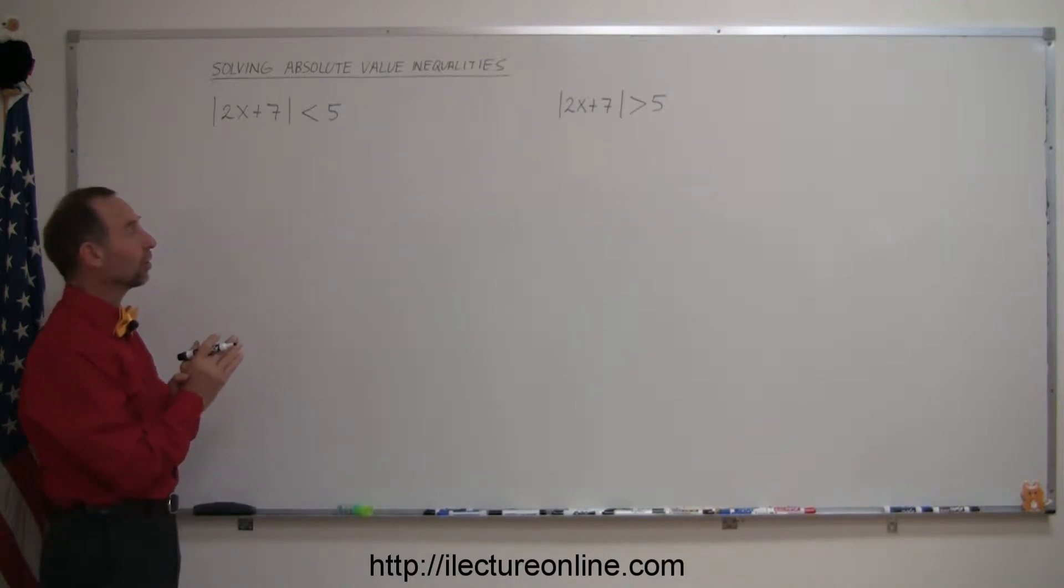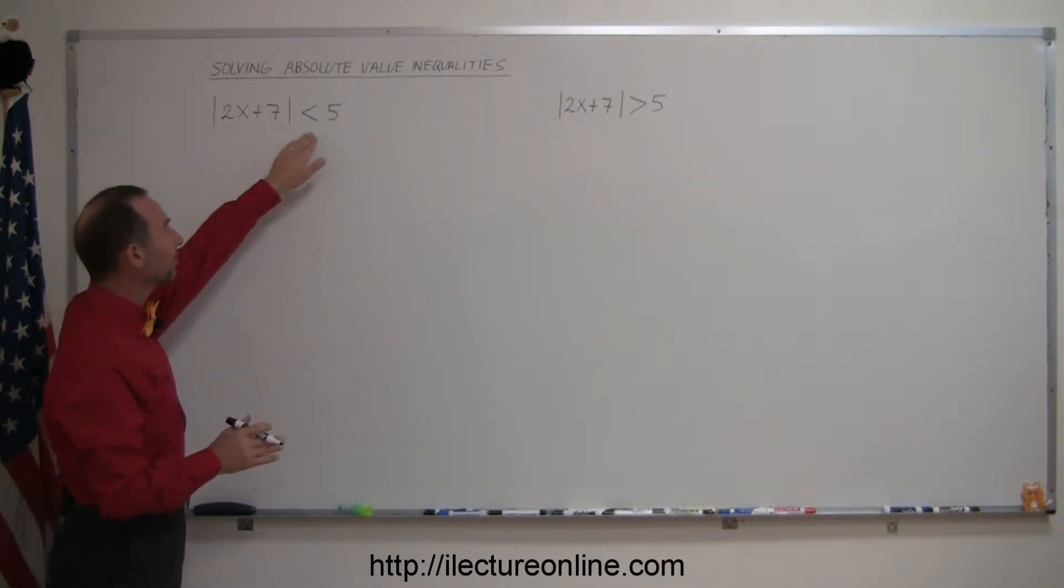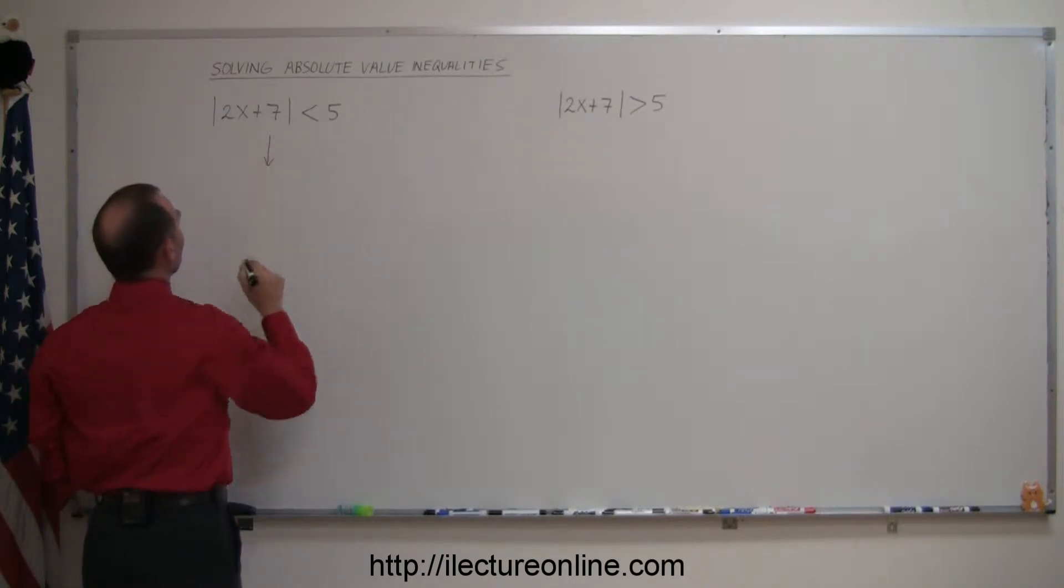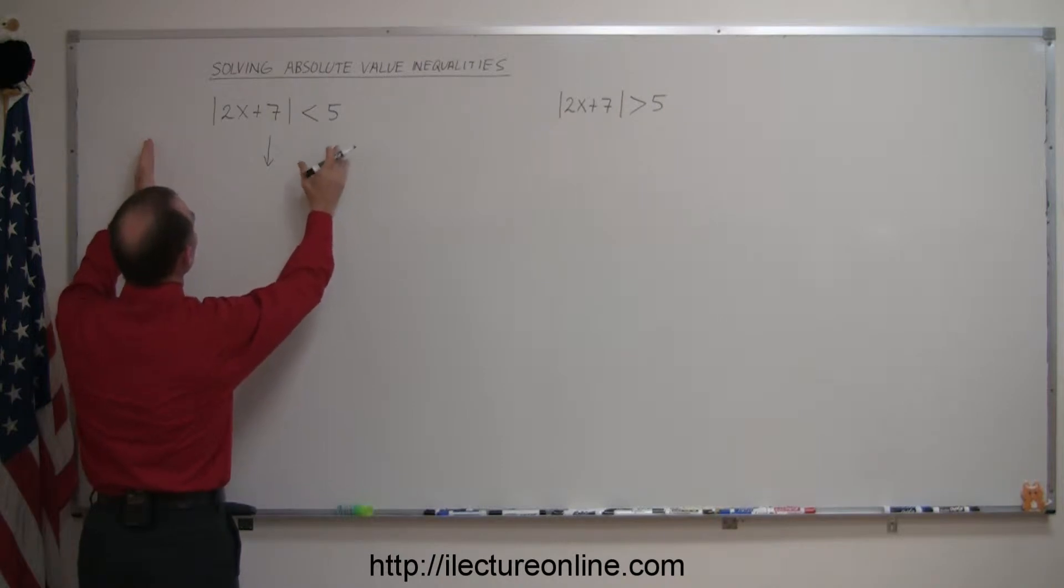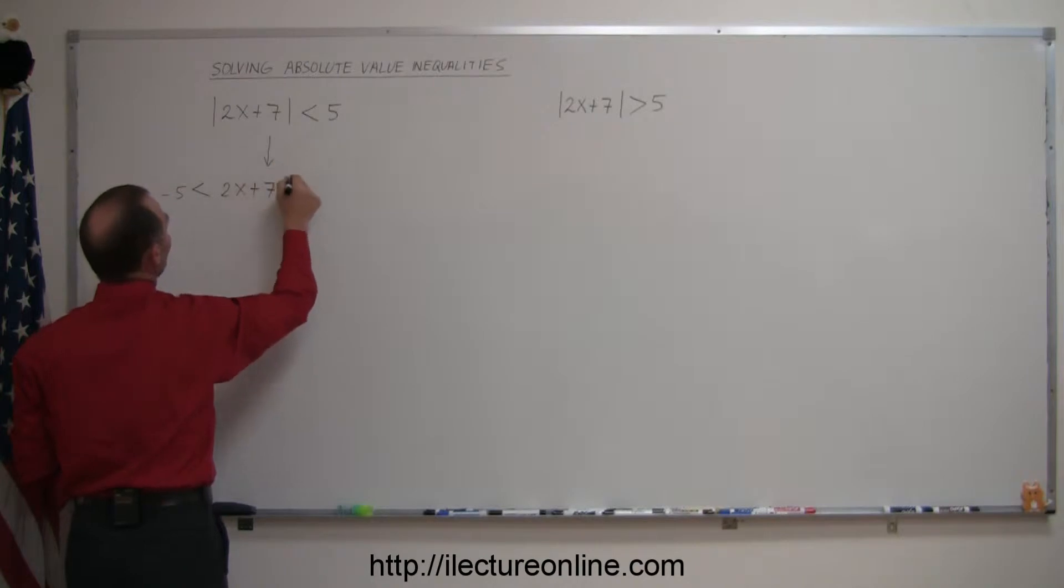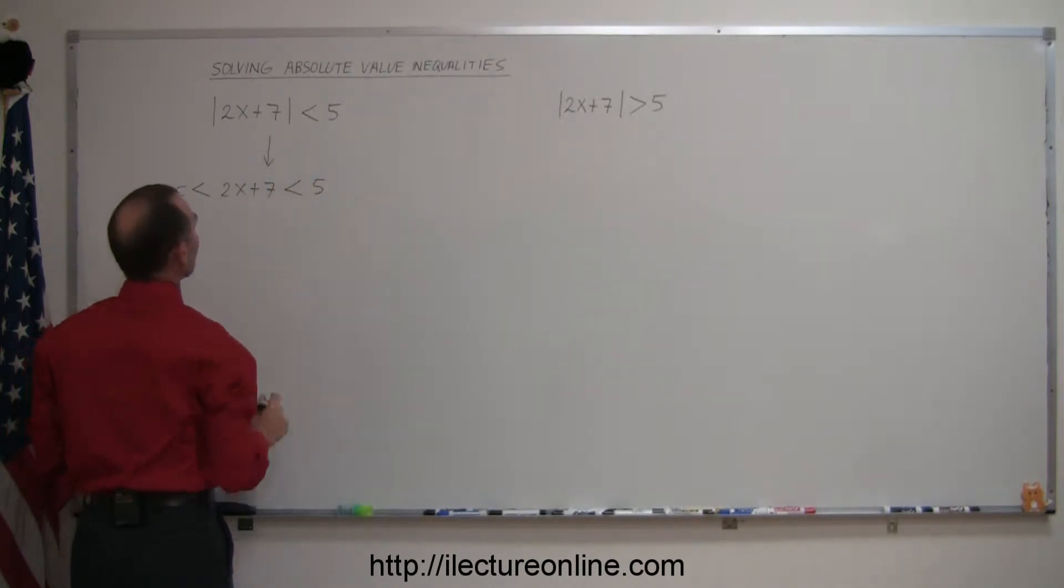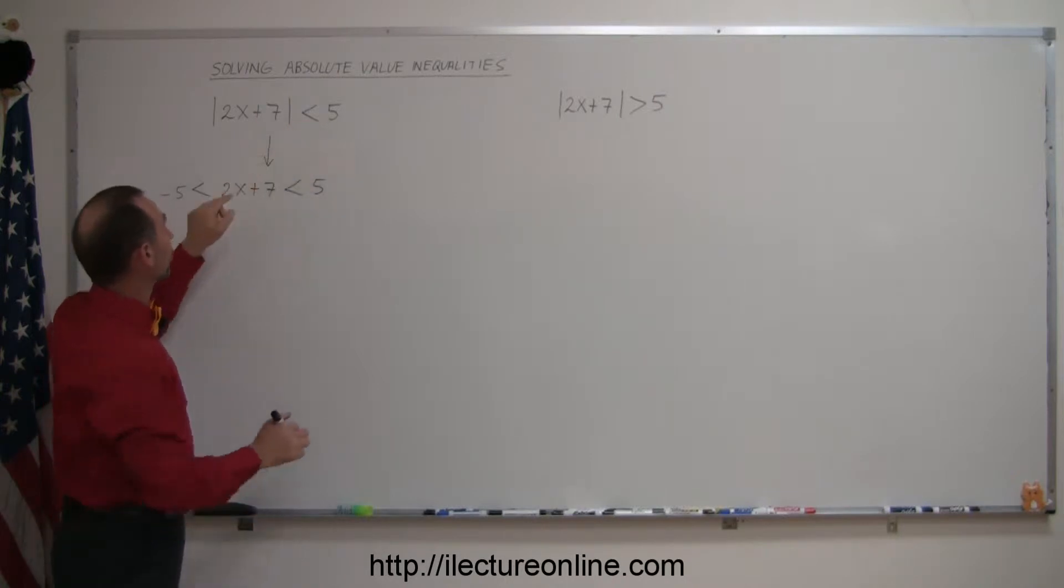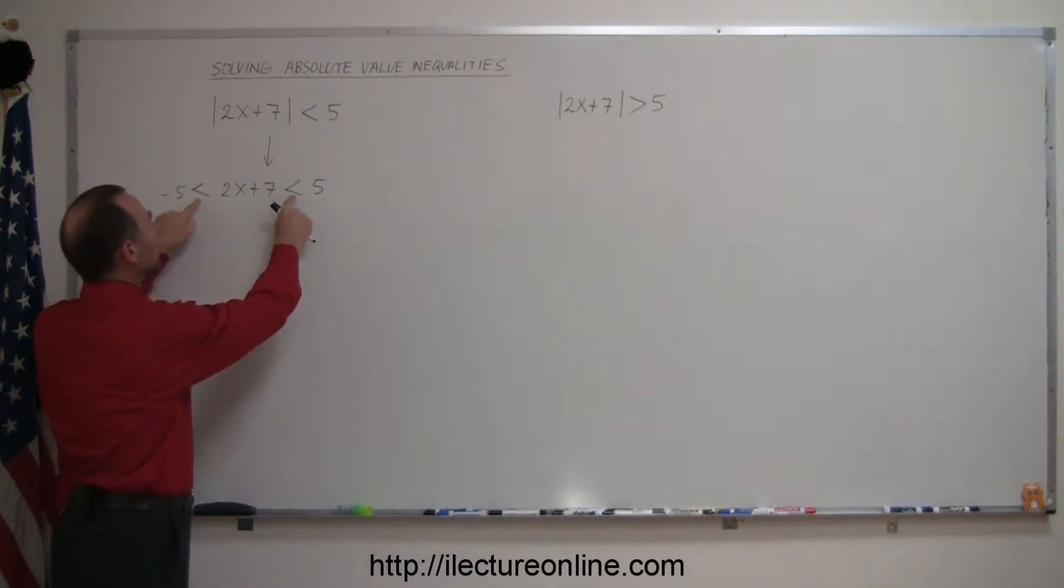So, the way you solve this problem is as follows. When you see something like this that is less than, you then rewrite this equation that becomes the same as saying that everything falls between the positive and negative of this number, which means that negative 5 is less than the quantity within the absolute value symbol, which is 2x plus 7, which then is less than 5 right here. Remember that if this says less than or equal to, you also have to include less than or equal to over here.